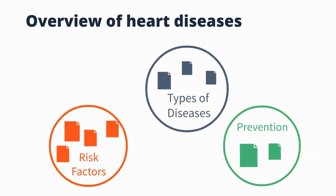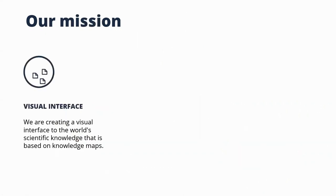Our proposal is to use Knowledge Maps instead of lists for discovery. In a Knowledge Map, you have many advantages over a list — for example, you get the main areas at a glance. In this example: risk factors, types of diseases, and prevention. Relevant articles are already attached to each area, so you can get immediately started. Our mission is to create a visual interface to the world's scientific knowledge based on these Knowledge Maps.